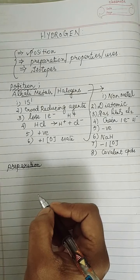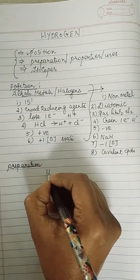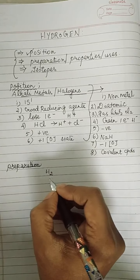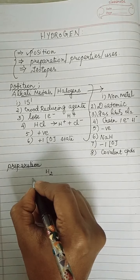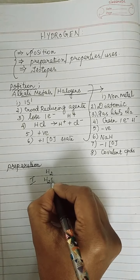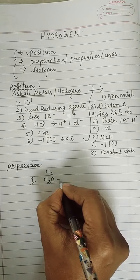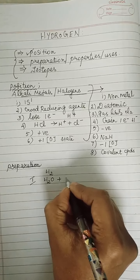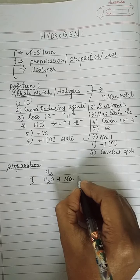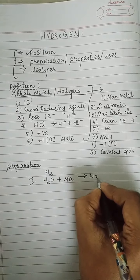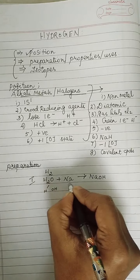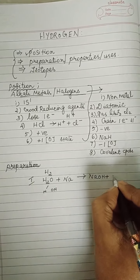Moving to the preparation of hydrogen. The formula for hydrogen is H₂. The first method: when a water molecule is added to sodium, you will get sodium hydroxide plus hydrogen. The reaction: 2Na + 2H₂O → 2NaOH + H₂. This is a vigorous reaction, so amalgam is used to reduce the reaction rate. Amalgam is an alloy of a metal along with mercury.